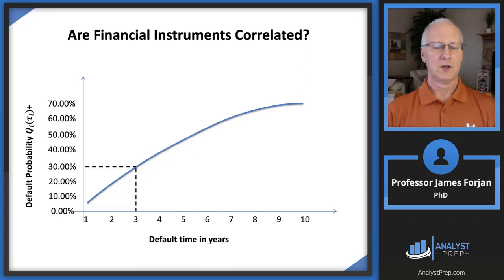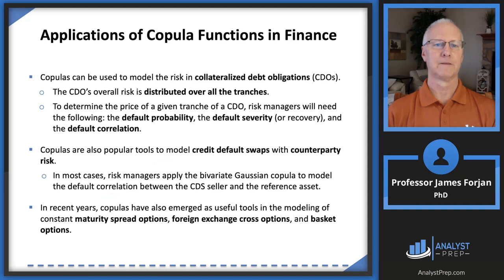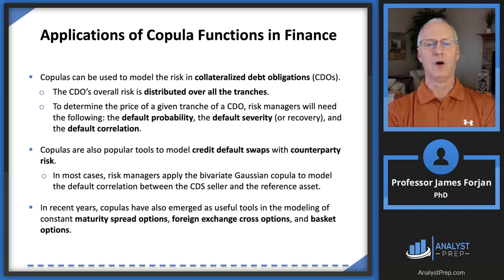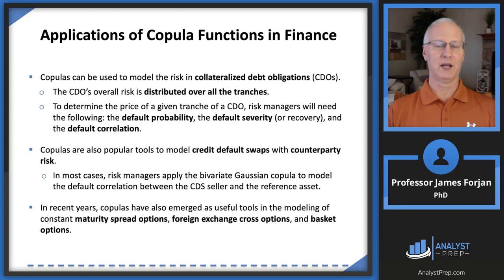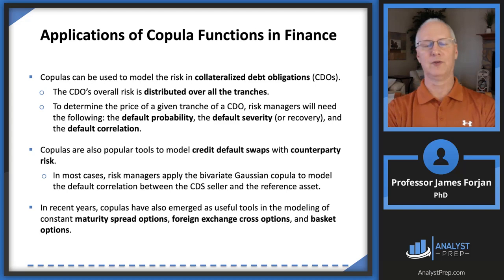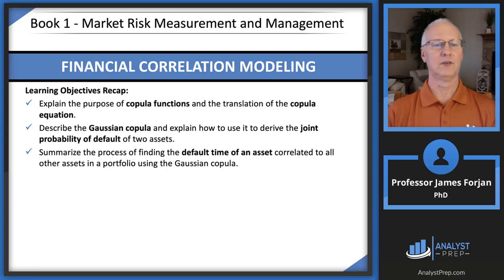The question is whether these financial instruments are co-related — and the answer is maybe. Copulas are popular tools for modeling credit default swaps and collateralized debt obligations. When a bond issuer borrows in the bond market, they make explicit promises to pay interest and principal — a more complex process than it appears. What the Gaussian copula model does is allow us to price this risk far better than simple correlation alone. And that takes us through the learning objectives for this chapter.